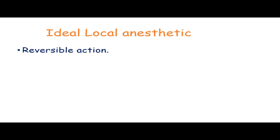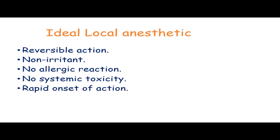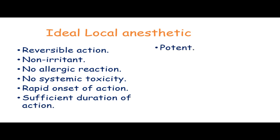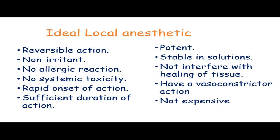An ideal local anesthetic should have the following properties: it should provide a reversible action and should not be irritating to the site of action or to the patient. It should not cause an allergic or hypersensitivity reaction, and no systemic toxicity should be associated with it. It should have a rapid onset of action and sufficient duration to sustain surgery, be potent and stable in solutions, not interfere with tissue healing, and should have a vasoconstrictor action and be cost-effective.